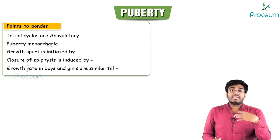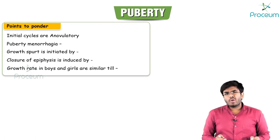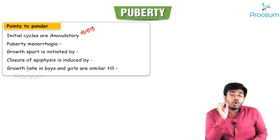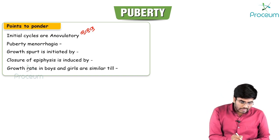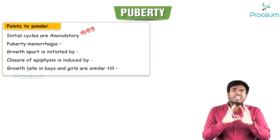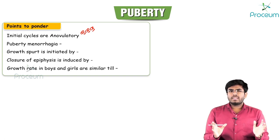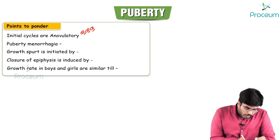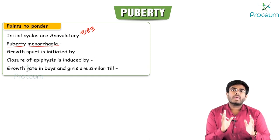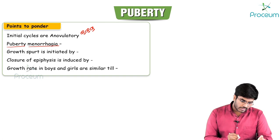After menarche, the initial cycles are anovulatory and therefore irregular. These initial cycles can be prolonged with excessive bleeding, causing menorrhagia — this is termed puberty menorrhagia. It is characterized by irregular and prolonged cycles.